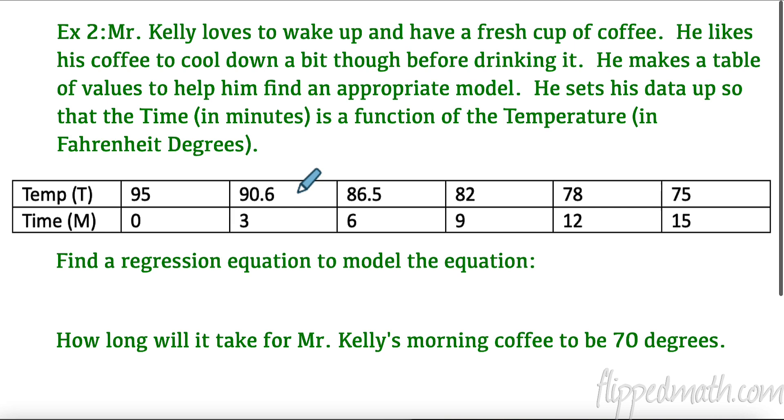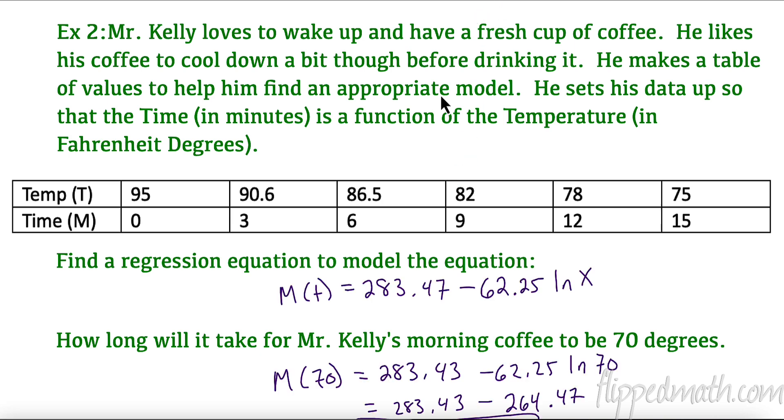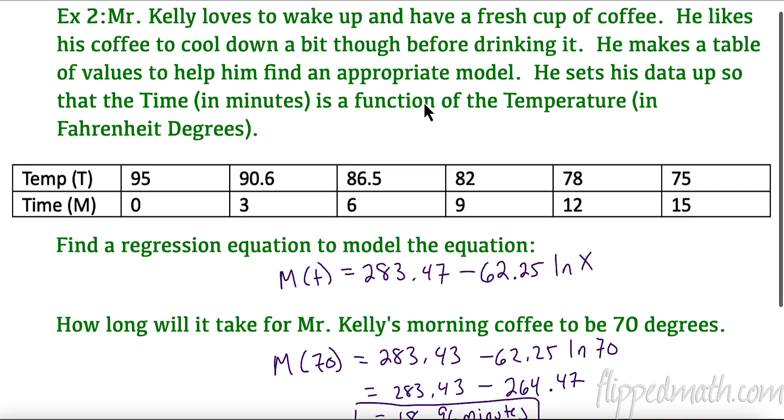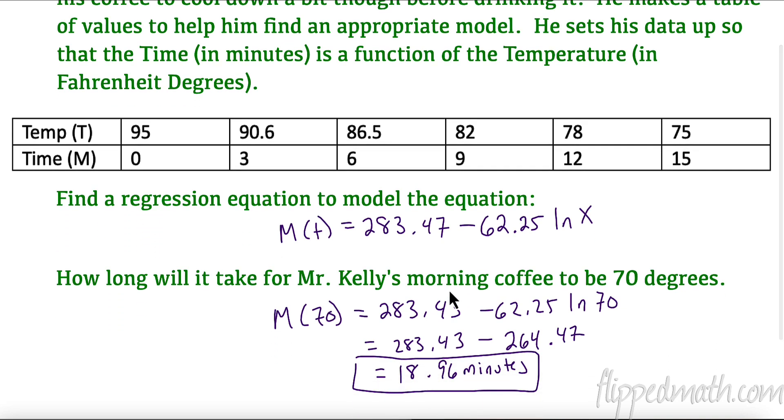I want you to try this one all on your own. See what you can do. So pause the video, find your regression equation and go for it. Let's take a look. So the regression equation I came up with was M(t) = 283.47 - 62.25 ln(x). Another great thing about storing this equation in your calculator is it doesn't round it when you store it. If you need to round I generally do two decimal places, I think it's a little bit safer than one.